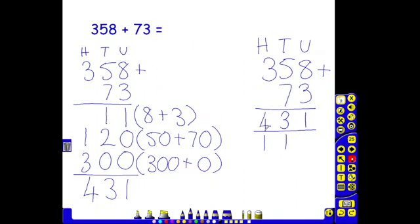So our answer is four hundred and thirty-one. You can see that we've got the same answer using both methods. Children would only be encouraged to move on to this harder method when they are very confident with this.